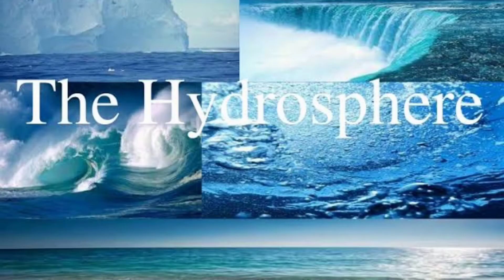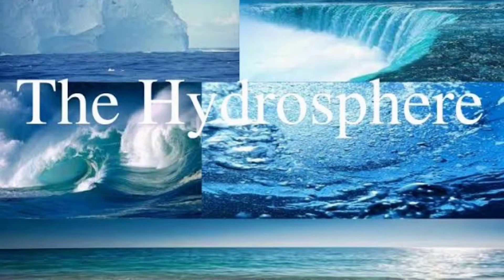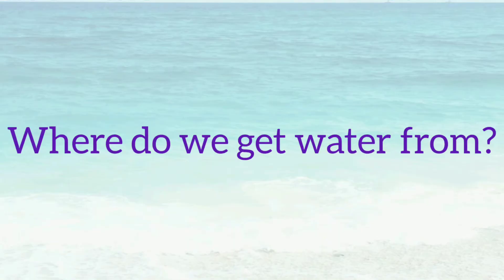Now let's look at the hydrosphere. We have already seen that the total amount of water on earth is called the hydrosphere. Two-thirds of the earth's surface is covered with water.